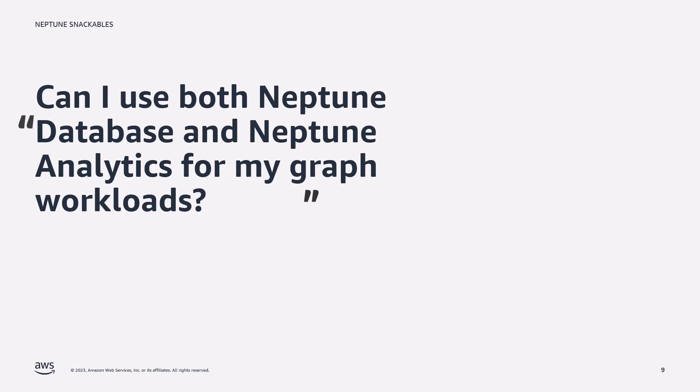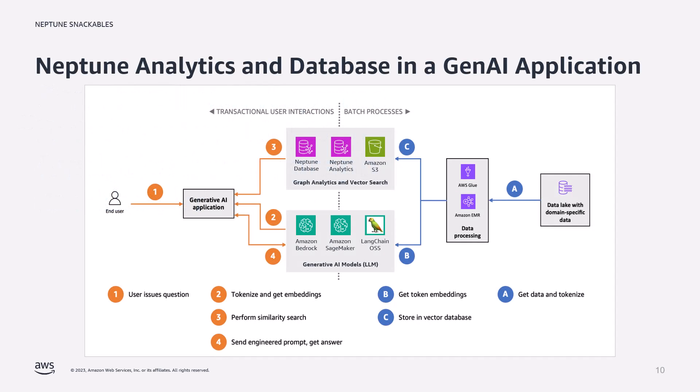Neptune Analytics and Neptune database provide similar yet significantly differing features — Neptune Analytics is not a replacement for Neptune database, and in many cases the two services complement each other. For example, in a Gen AI application you're going to want a persistent store of your graph data to use as context for an LLM — that's where you'd use Neptune database. Once vector embeddings have been calculated, you'll want to do vector similarity searches across your graph data to find similar objects that relate to a user query, and as Neptune Analytics supports vectors, that's where you'd use it.